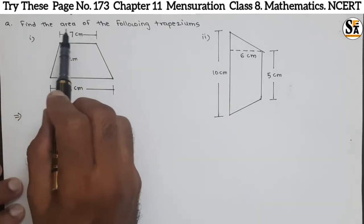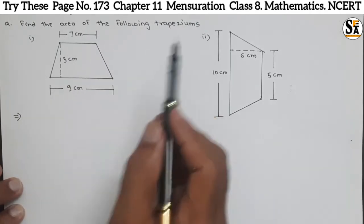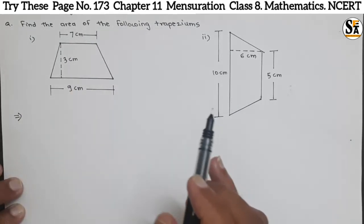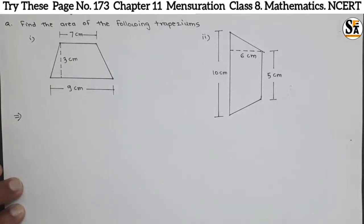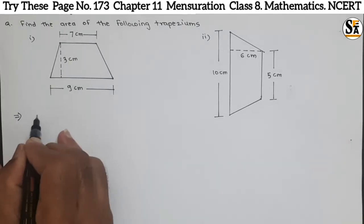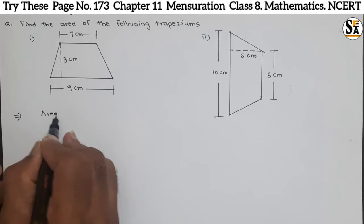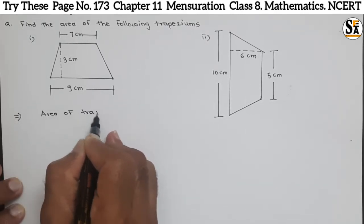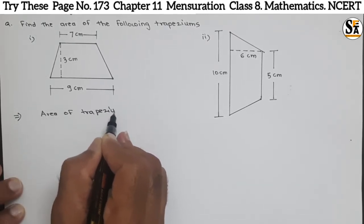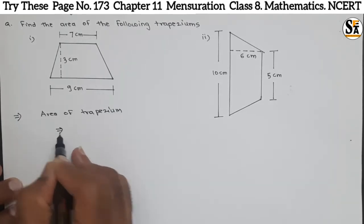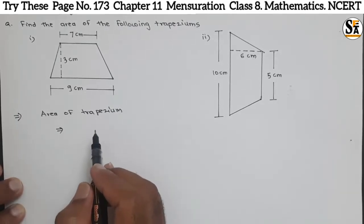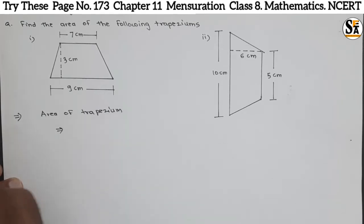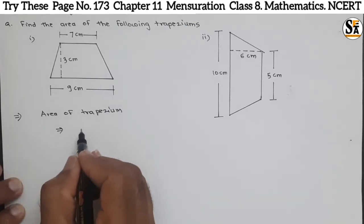The question is: find the area of the following trapeziums. Two trapeziums are given — first and second — and we have to calculate the area. Now, what is the formula for the area of a trapezium? We have seen how this formula is derived in the last question, so I will write it directly here.